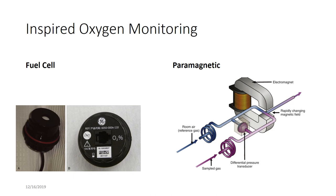The paramagnetic oxygen analyzer has sample and reference gas streams that converge along a magnetic field. Because the two streams have different oxygen tensions — different numbers of oxygen molecules — this creates a pressure differential across the magnetic transducer, which converts that to an electrical signal displayed to you. Oxigraphy uses laser spectroscopy at 760 nanometers; as oxygen increases, the intensity of light changes.